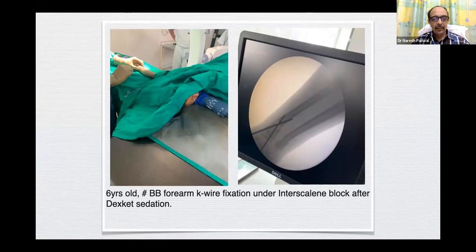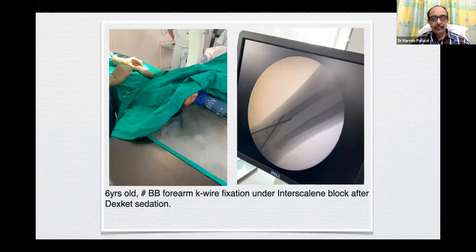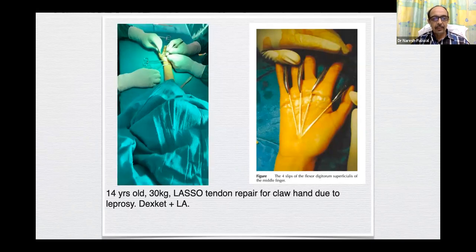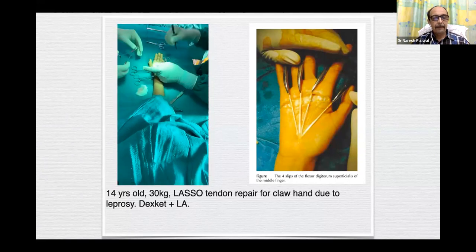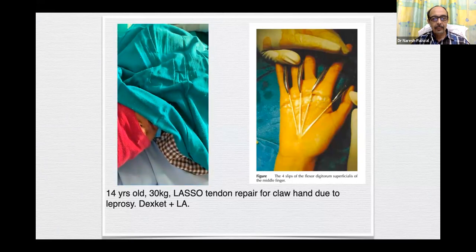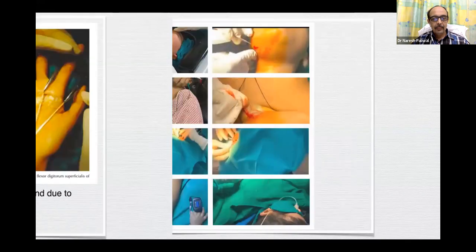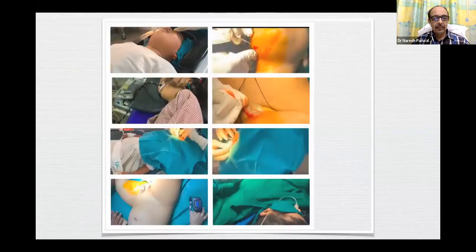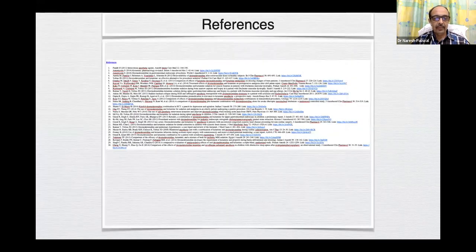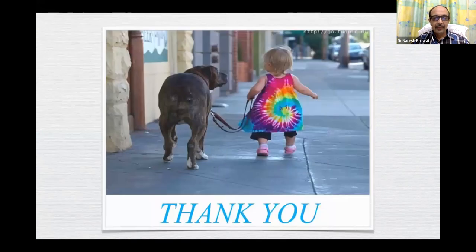This is a 6-year-old with fractured both-bone forearm — K-wire fixation under interscalene block after giving dexket. This is a lasso tendon repair in a 14-year-old, 30 kg — lasso tendon repair for claw hand due to leprosy — dexket and local anesthesia. This is a collage of different difficult airway procedures in kids. Thank you very much for patient listening. These are a few of the references. If there are any questions, I will be very happy to answer.